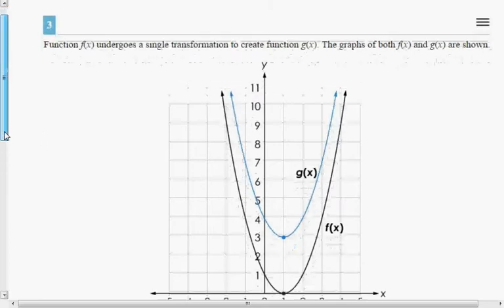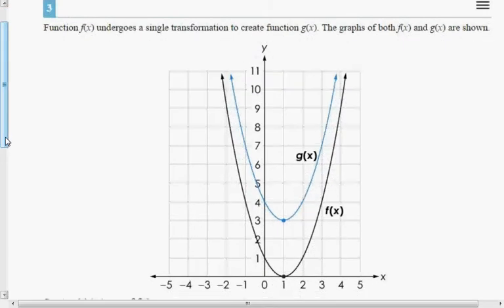And you can see clearly, first of all, that these are parabolas, which means that they are quadratic equations. So the basic quadratic equation has an x squared term in it. So say f of x equals x squared.